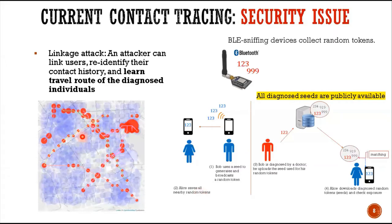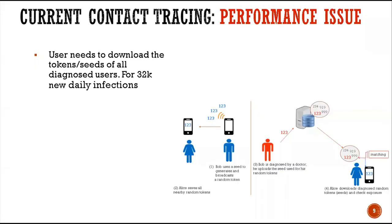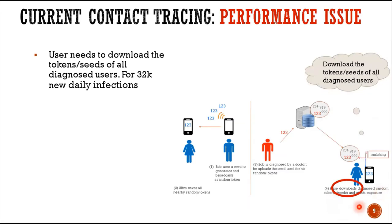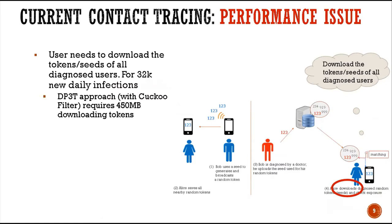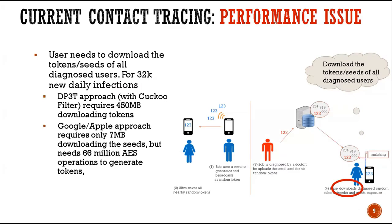This picture shows a real attack on Apple and Google's solutions. Besides the security issue, there is a performance problem especially on the end user device. Users need to download the tokens for all infected users. For 32,000 new daily infections, the DP3T approach requires 450 MB of token downloads. The Google and Apple approach requires only 7 MB of download, but needs 66 million AES operations to generate the tokens. Clearly you need a powerful phone to do contact tracing.